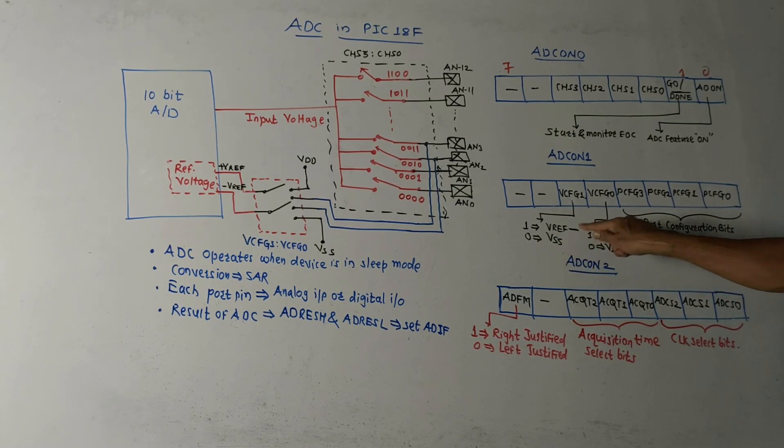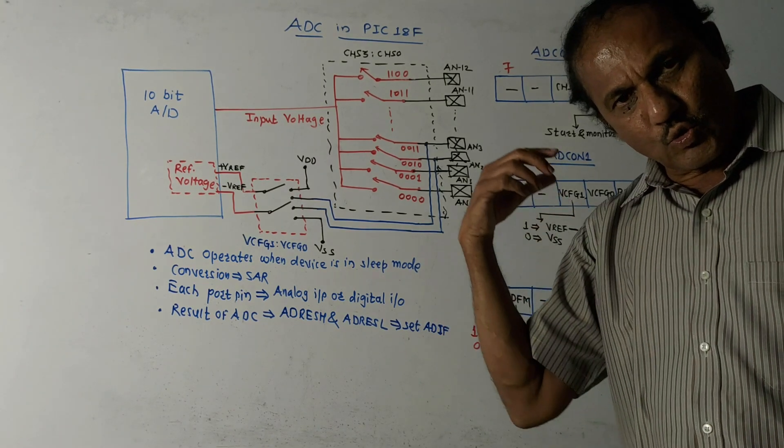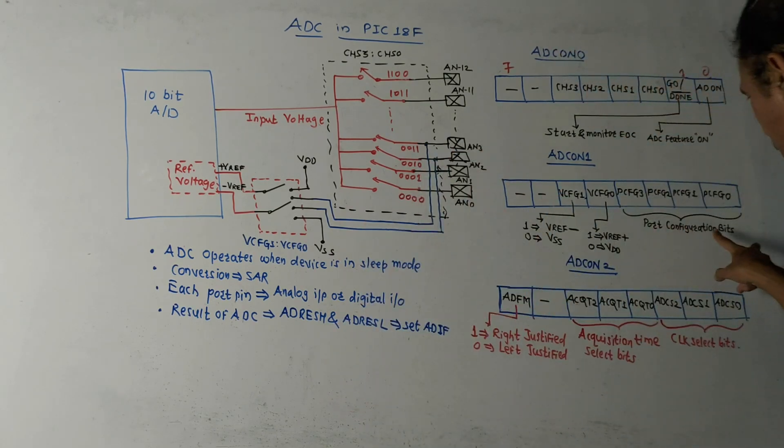If this bit is one, reference voltage will be positive. So this control register also has port configuration bits. So to configure the port, these four bits are used.